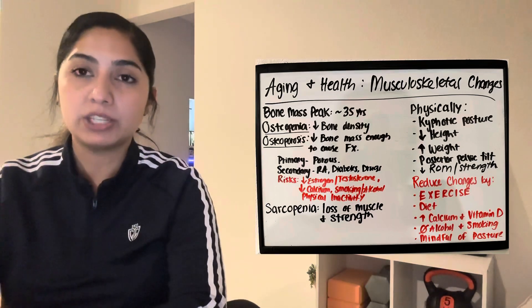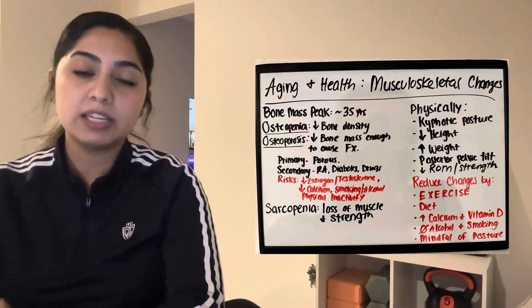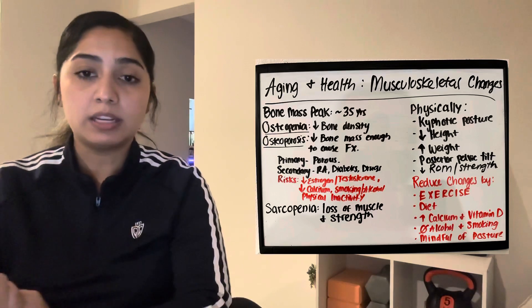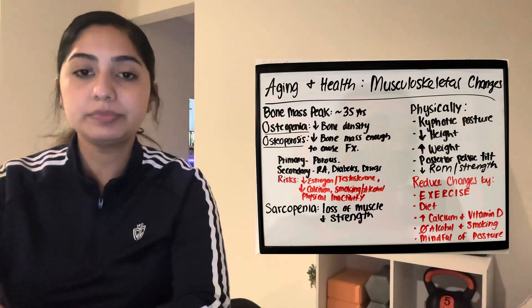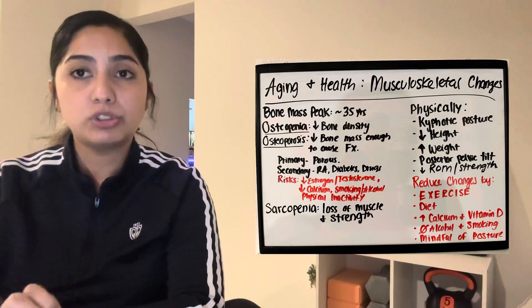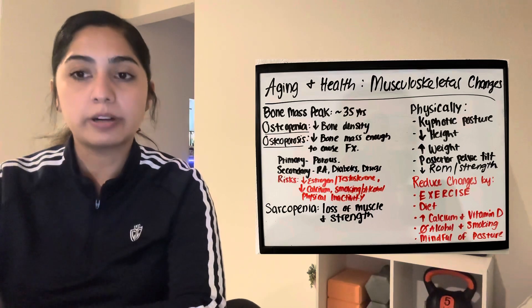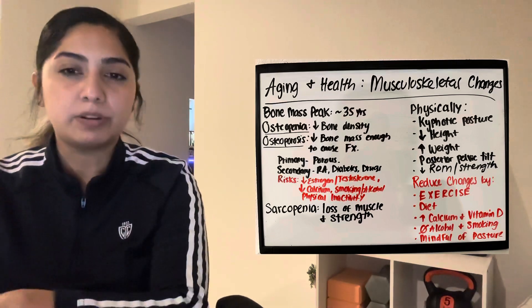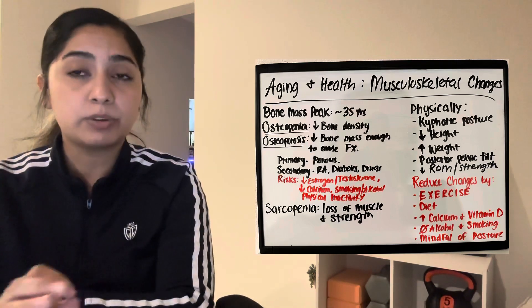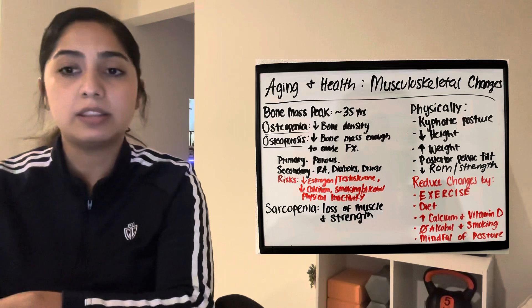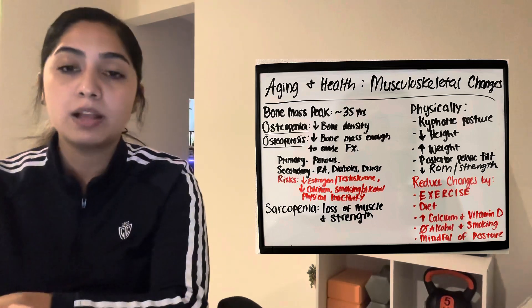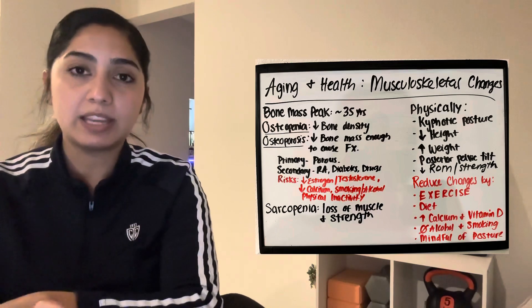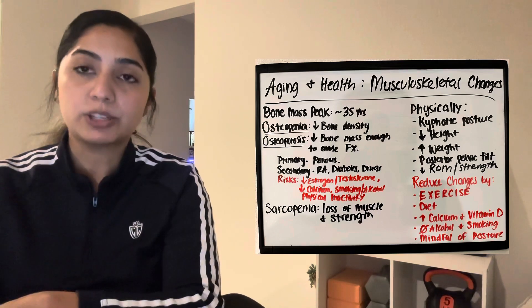After age 35, calcium gradually decreases from the bones, which results in loss of bone strength, or osteopenia. Osteopenia and osteoporosis differ because osteoporosis is a condition where there is substantial enough loss of bone mass to result in fracture — the bones are so weak that they can fracture.